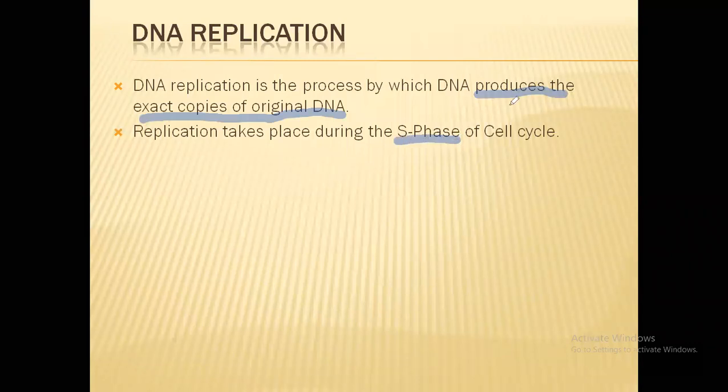The cell cycle has a first preparatory phase which we call interphase. Now this interphase is further divided into three stages which is the G1 phase, the S phase, and the G2 phase. The S phase is the synthetic phase. The reason it replicates is that during the formation of a new cell, a new set of chromosomes or a new set of DNA will be required. So DNA will be replicated in the S phase, making a copy of itself which will be necessary for new cell formation.